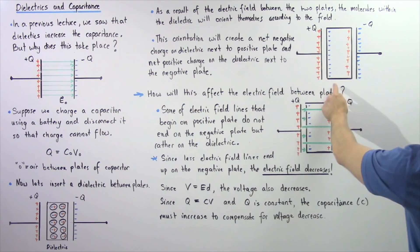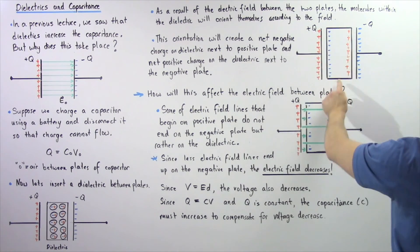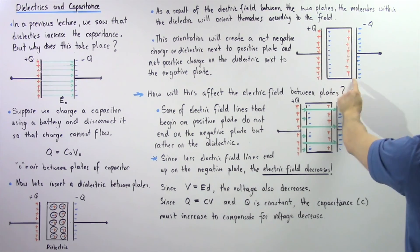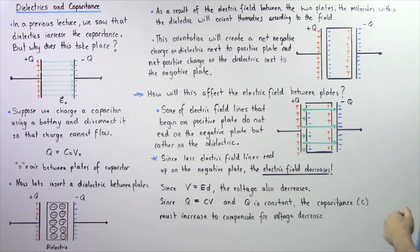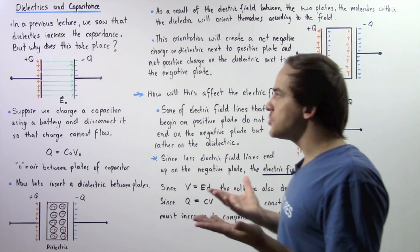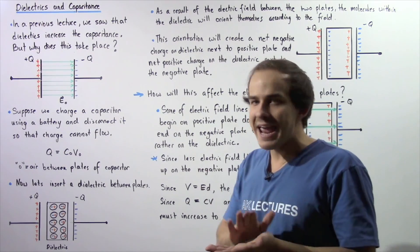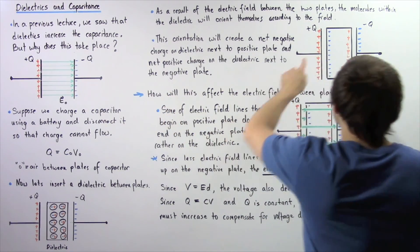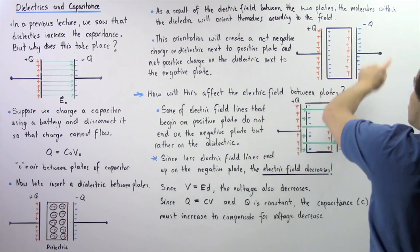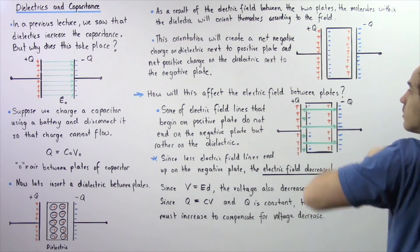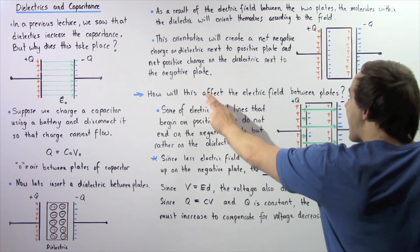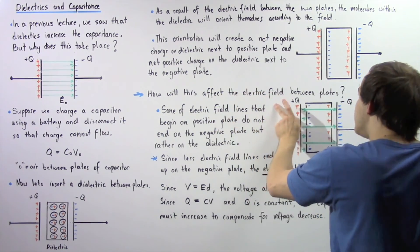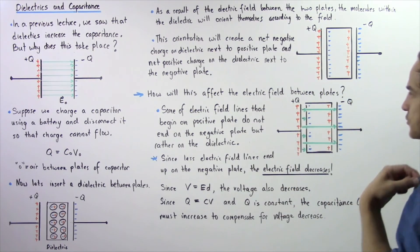And that's shown in the following diagram. So we have a net negative side of the dielectric and a net positive side of our dielectric. Now the question we want to answer is: how will this orientation of the molecules within our dielectric material actually affect the electric field between our plates?